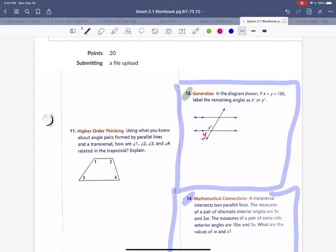So x and y add up to 180, which means this would have to be y here. Label all the remaining x or y. So we did, in our notes.